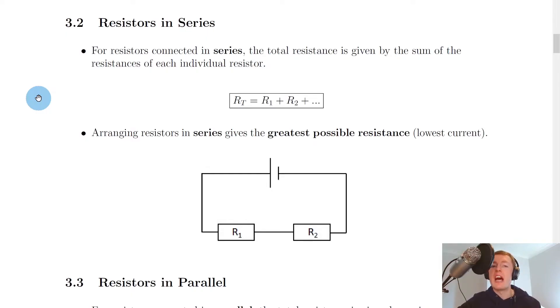We'll firstly look at resistors in series, and you might remember this from the National 5 Physics course. For resistors connected in series, the total resistance is given by the sum of the resistances of each individual resistor.